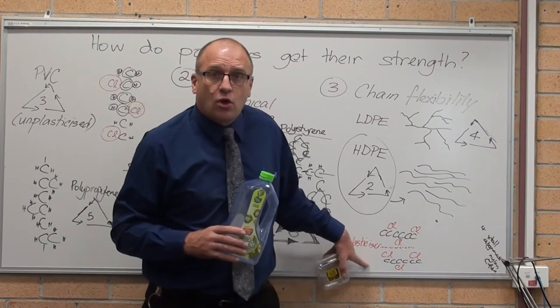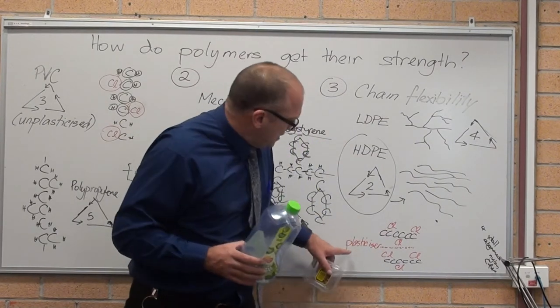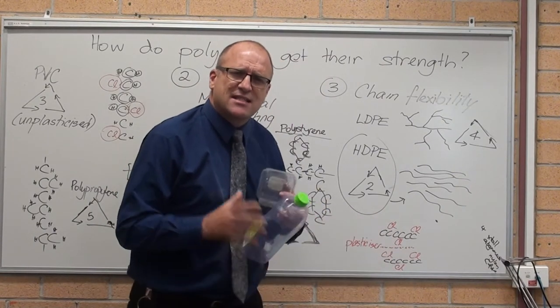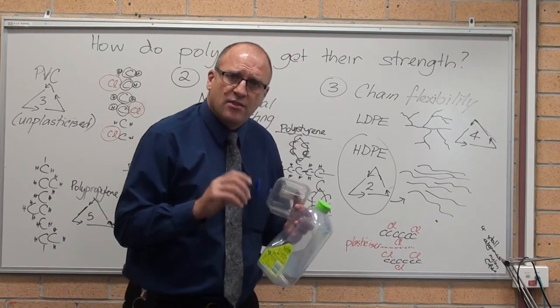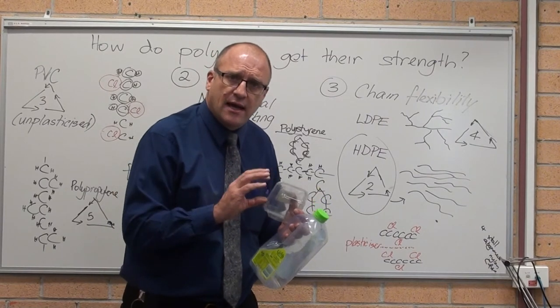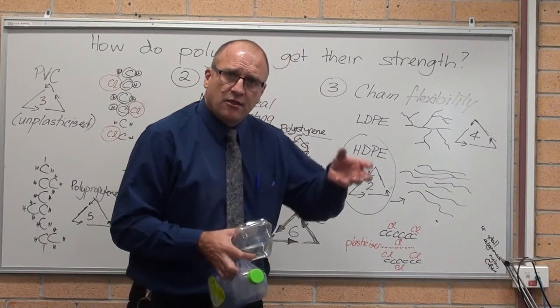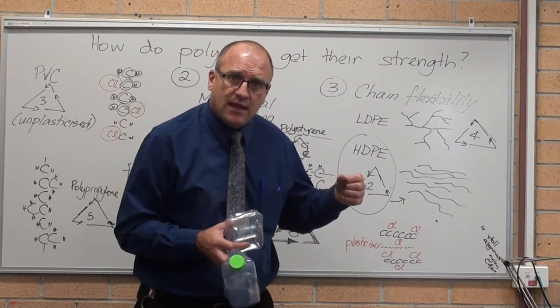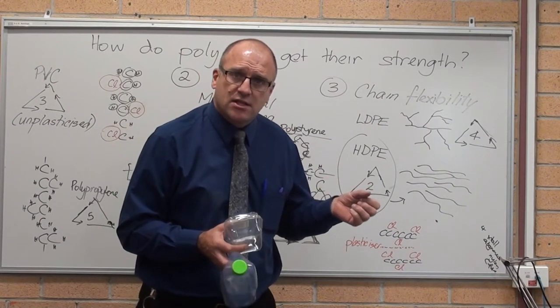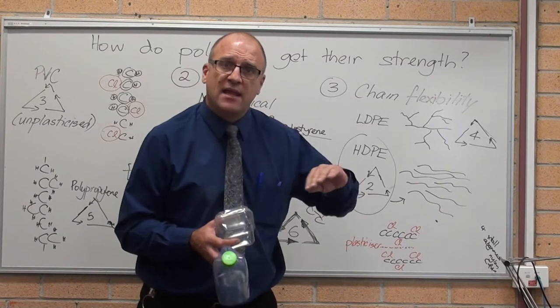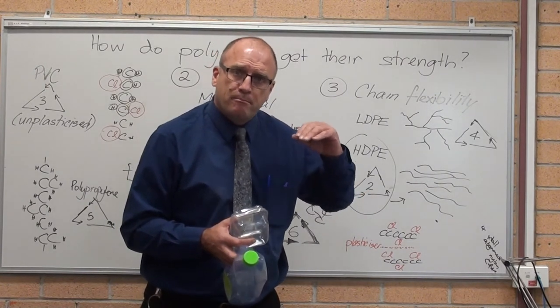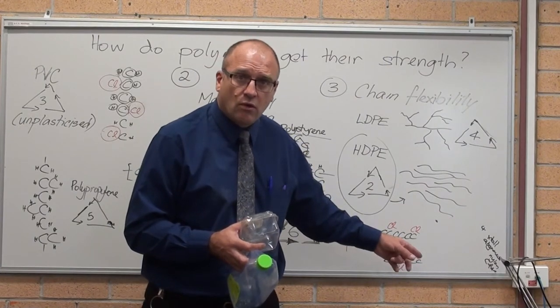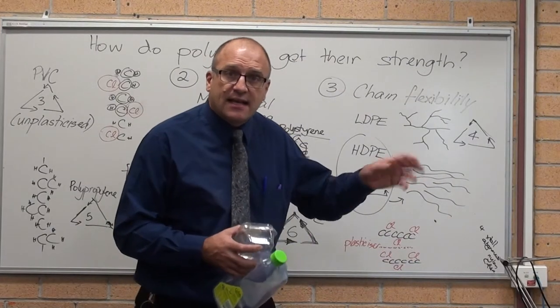Plasticised polyvinyl chloride, they actually put another chemical in that just sits between the chains and just separates it a little bit. This is your vinyl raincoat you had when you were a kid. The flexible raincoats, the dashboard in a car, the upholstery in a car, unless it's an expensive one and it's leather, is vinyl, plasticised polyvinyl chloride. The plasticiser gives it flexibility.